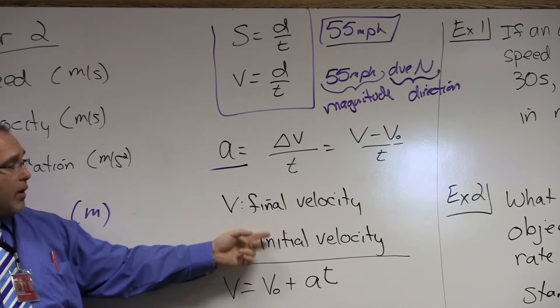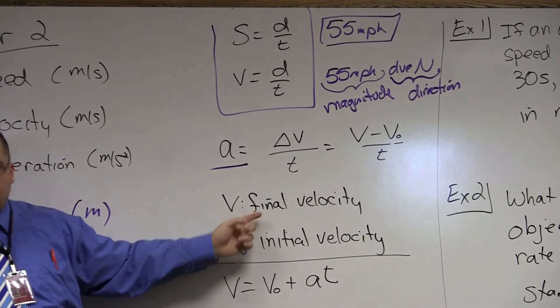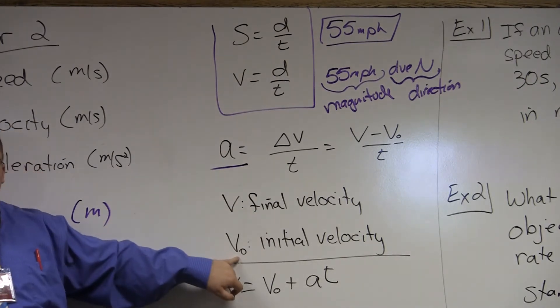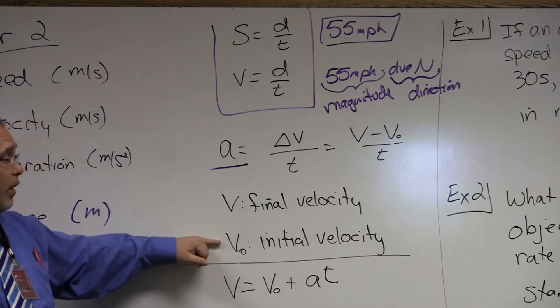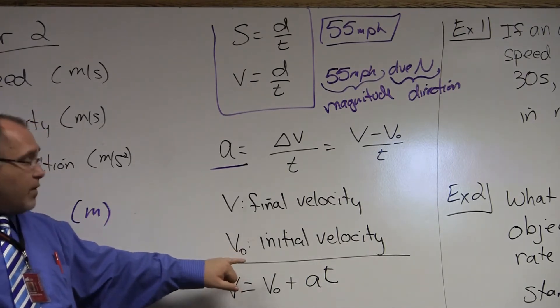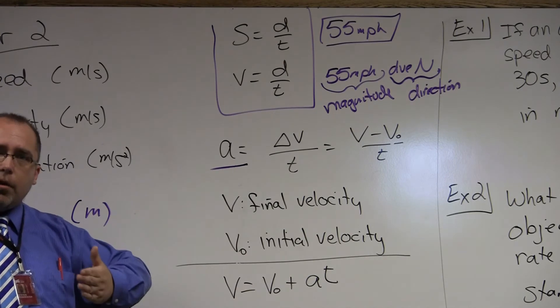The v sub zero represents your initial velocity, or your starting velocity and your end velocity. The velocity is the same as final velocity. The reason why we use v sub zero, and there are various different notations, but we use v sub zero to denote velocity at the time of zero. So that's your starting velocity.